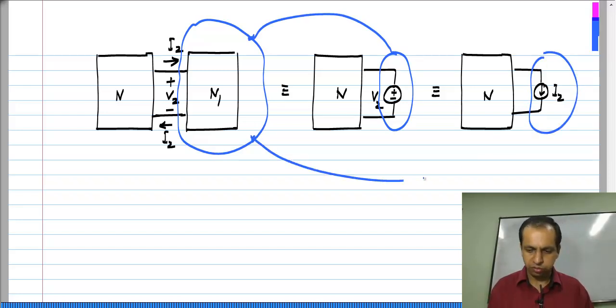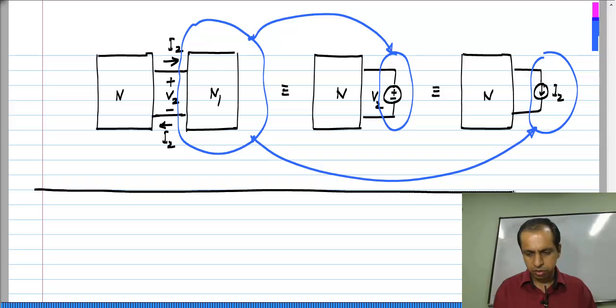Similarly, this one here is a substitution for the entire network N_1. So, that is the minor extension to the substitution theorem.